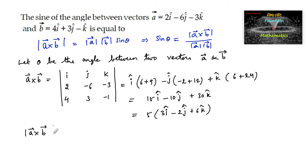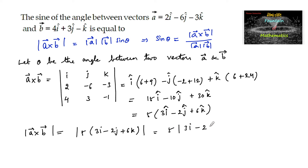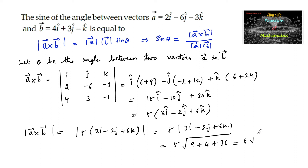Now we find the magnitude |a × b|, which equals |5(3i − 2j + 6k)|. Since 5 is a scalar we bring it outside: 5 × √(3² + (−2)² + 6²) = 5 × √(9 + 4 + 36) = 5 × √49 = 5 × 7 = 35. So |a × b| = 35.